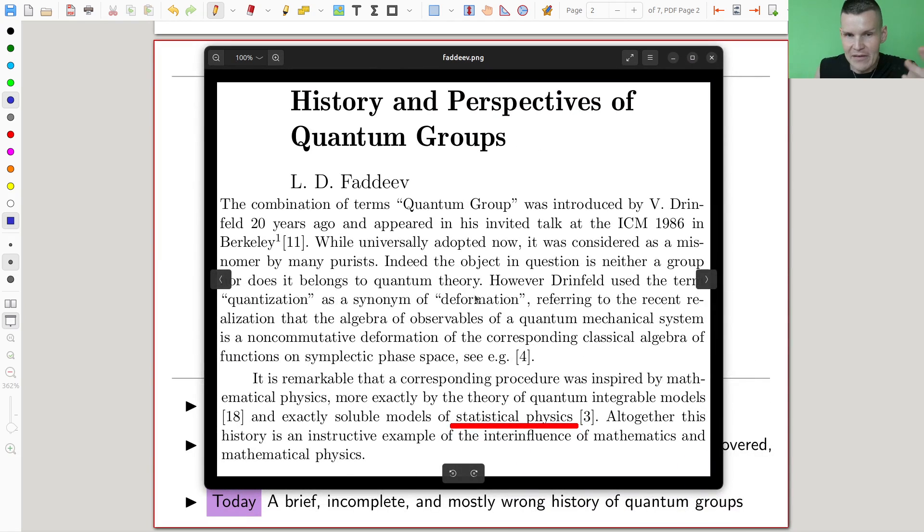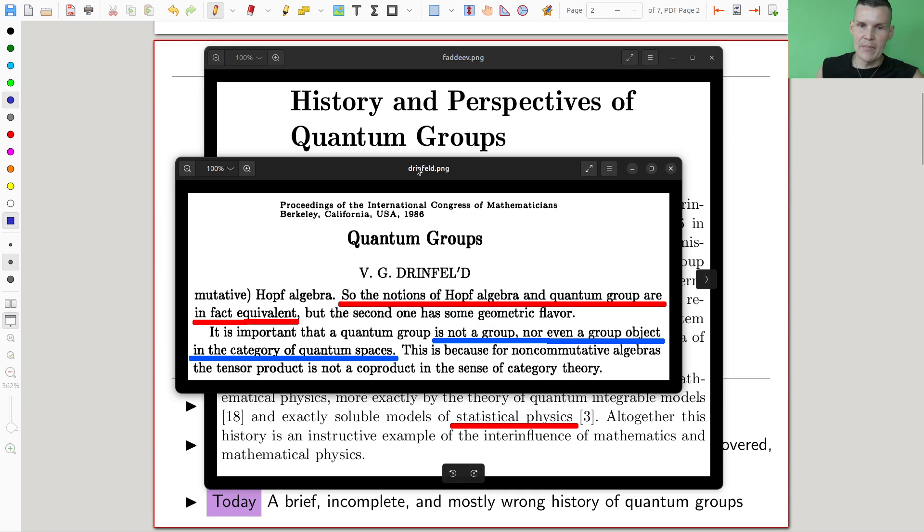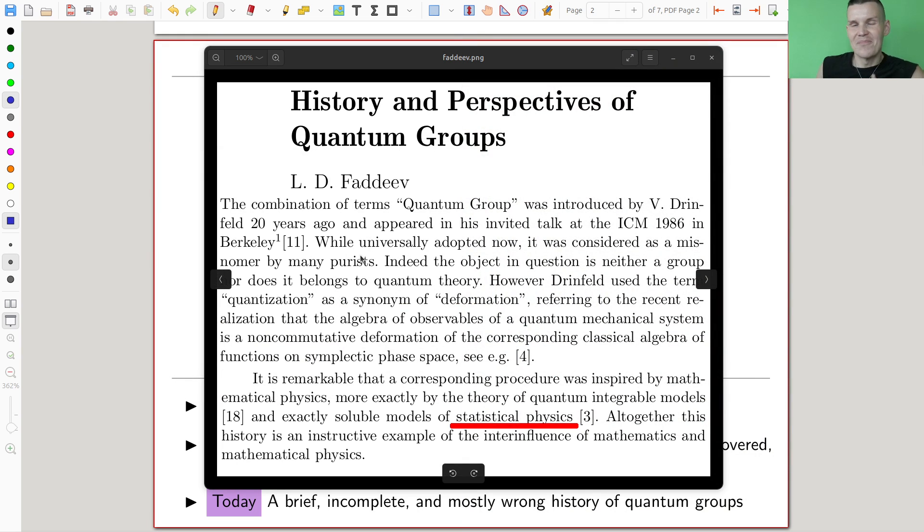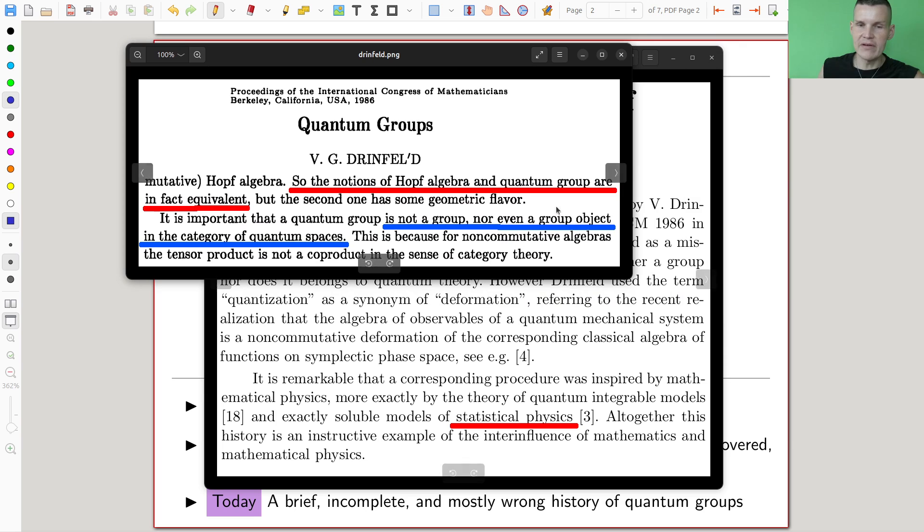So Fadeyev talks about this notion of a quantum group. The name apparently goes back to this paper by Drinfeld on quantum groups. While universally adapted now, it was considered as a misnomer by many purists. Essentially Drinfeld writes about this - I'm not going to explain what a quantum group is, but I'm trying to motivate the history. So Drinfeld writes in this paper, which defines quantum groups on the International Congress of Mathematics four years earlier, that whatever is a quantum group, it's not a group, not even a group object in the category of quantum spaces. So that's what Fadeyev means was a misnomer. Some say it's neither quantum nor a group. It's a strange thing.